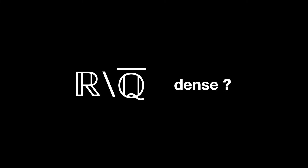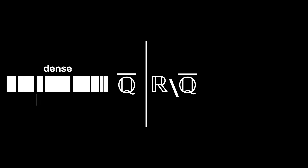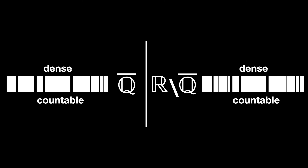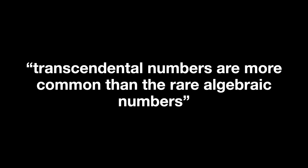But are transcendental numbers also dense? Yes, even though uncountability does not imply density. When comparing a set that is dense and countable — the algebraic numbers — with a set that is dense and uncountable — the transcendental numbers — we can easily see intuitively that the latter will always be larger. In fact, that's the intuition behind the statement: transcendental numbers are more common than the rare algebraic numbers.